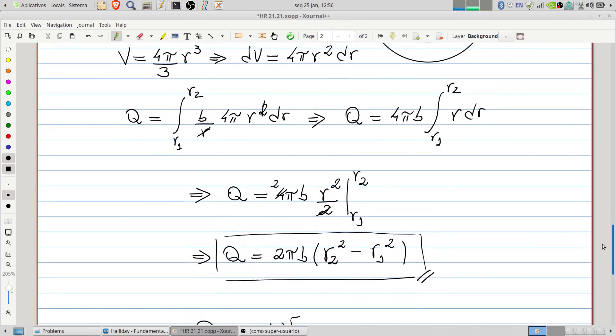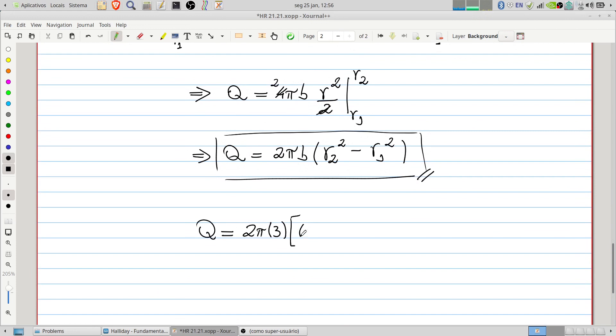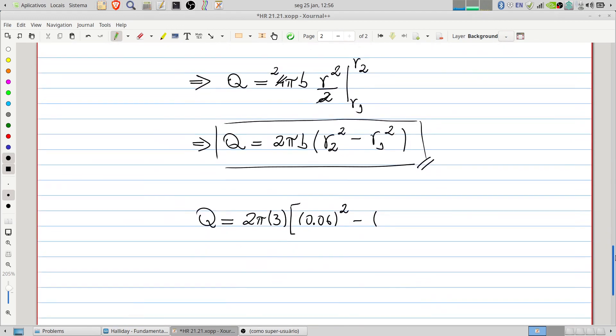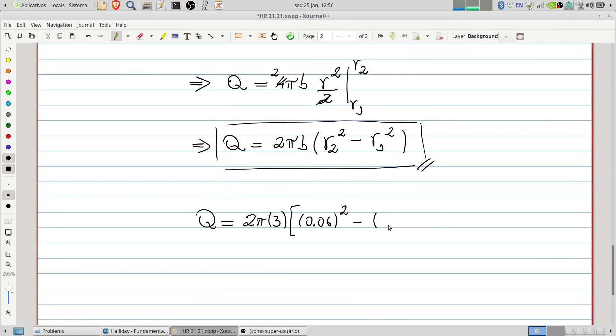so we can write here 0.06, 6 centimeters squared minus 0.4 centimeters. Or better, 4 centimeters, or 0.04 meters, also squared.